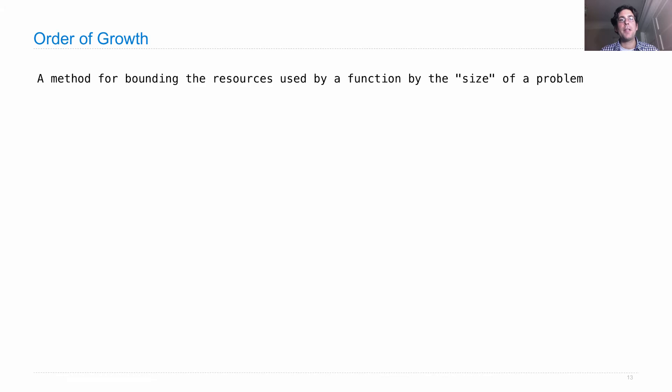We've reached one of the most important concepts in computer science: the order of growth of a computational process. The order of growth is a method for bounding the resources used by a function by the size of a problem.